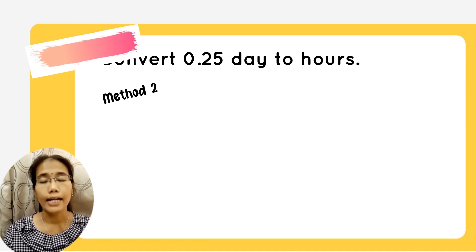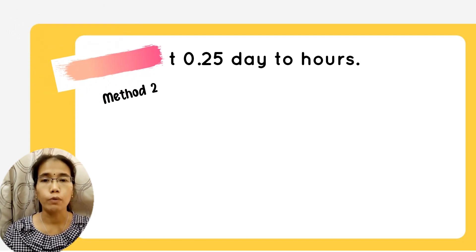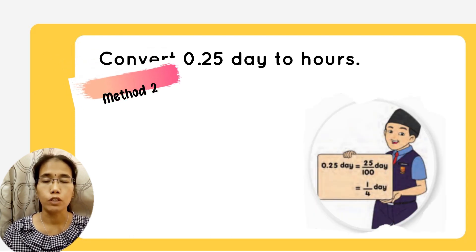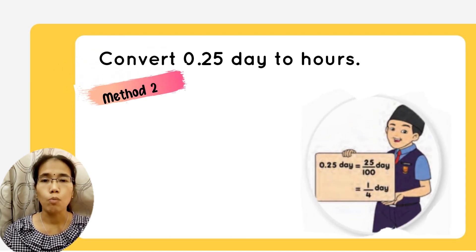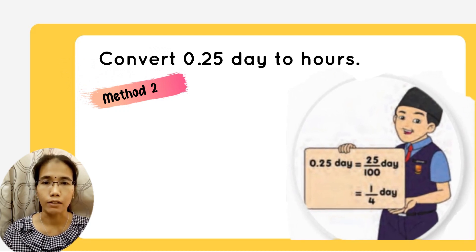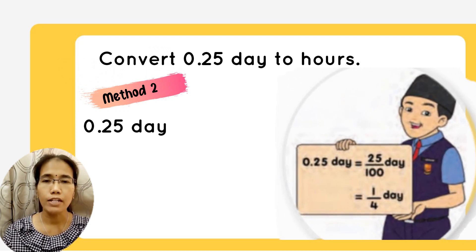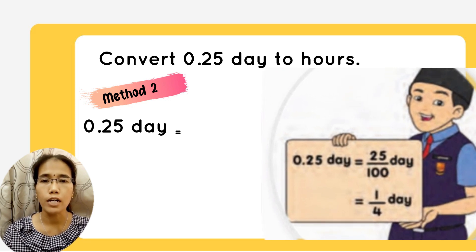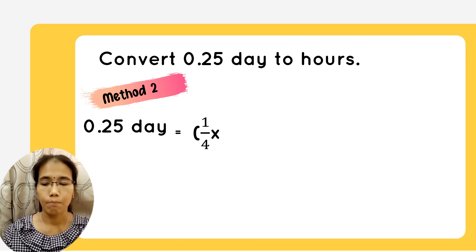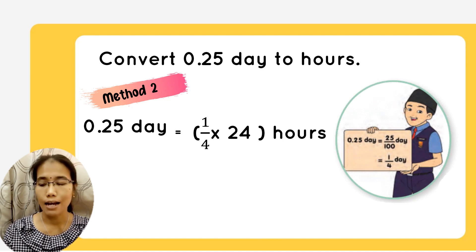Another method is 0.25 day, you convert to fraction. Look at this diagram, how to convert to fraction. In 0.25, it will be equal to 25 over 100. Then, when you simplify the fraction, 25 over 100, you will get 1 over 4 day. 1 over 4 multiplied with 24, you will get 6 hours.